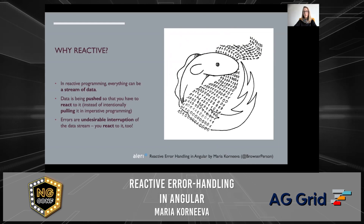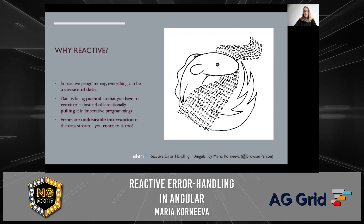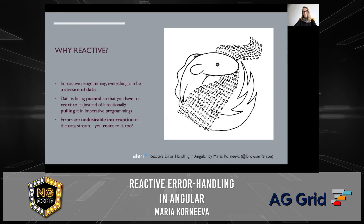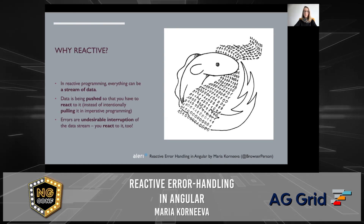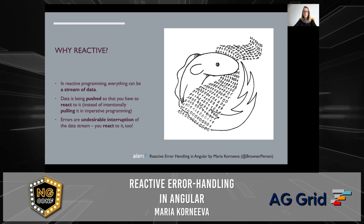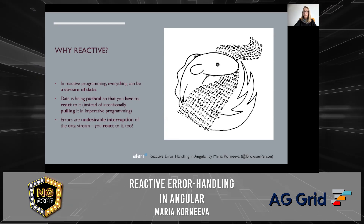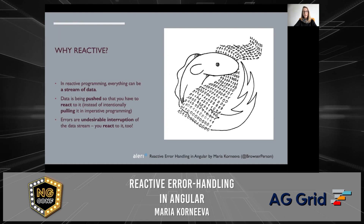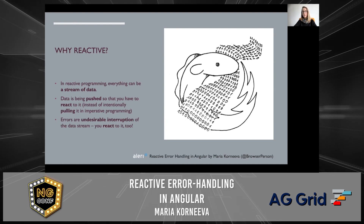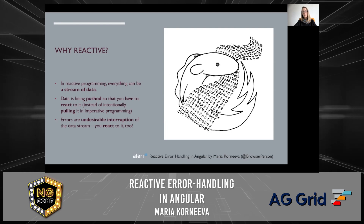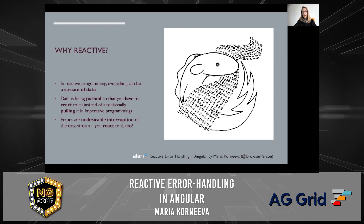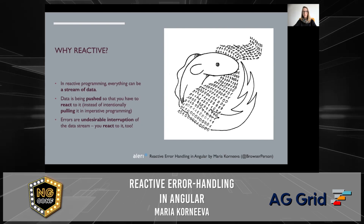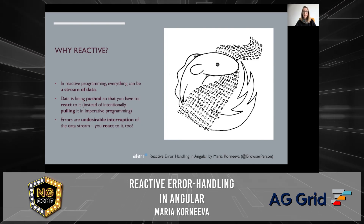Let's briefly talk about the reactive part of my topic. In reactive programming, everything can be considered as a stream of data. Philosophically speaking, writing a web application is nothing but moving around data. So you push your data and have to react upon it, instead of pulling it as in imperative programming. In this respect, an error is nothing else but an undesired interruption of the data stream, and error handling is nothing else but the attempt to restore this data flow.